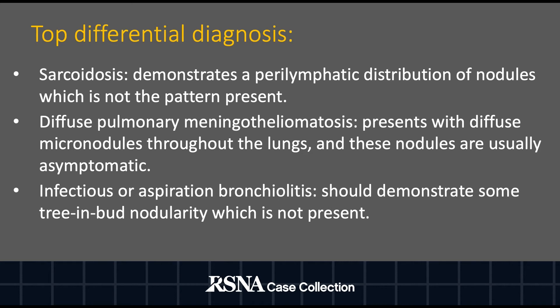Additional diagnostic considerations include sarcoidosis; however, this should have demonstrated a perilymphatic distribution of the nodules, which is not present here. Diffuse pulmonary meningiotheliomatosis could have also been considered; however, this would present with diffuse micronodules throughout the lungs and these nodules are usually asymptomatic. Additionally, infectious or aspiration-related bronchiolitis could have been considered; however, this should demonstrate tree-in-bud nodularity, which is not present in this case.